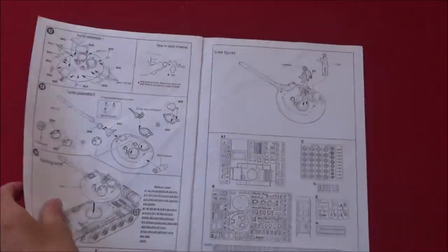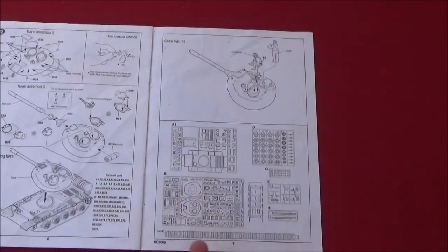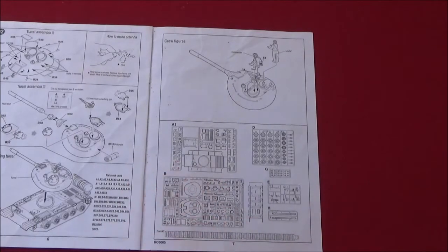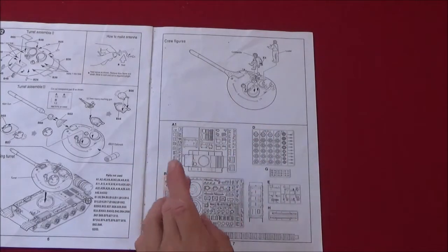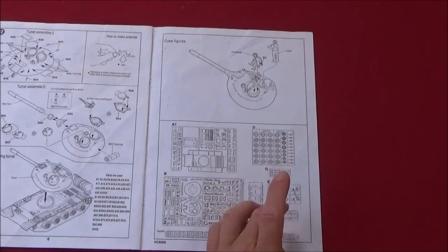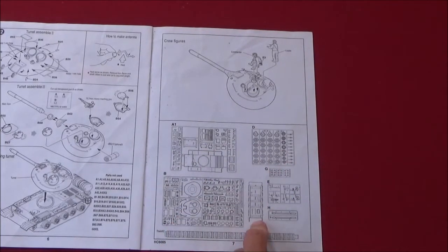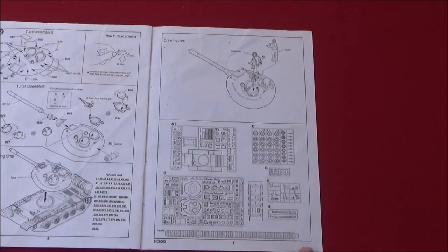And here you can see the parts on the back. Five sprues, the bottom of the hull, polycaps in the track.